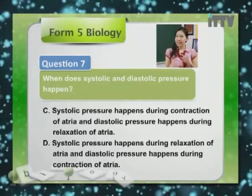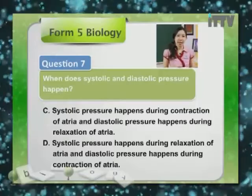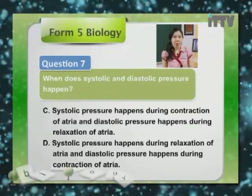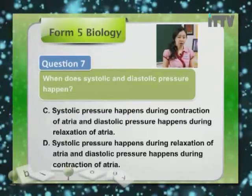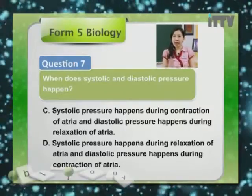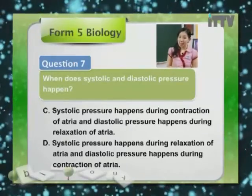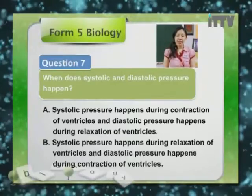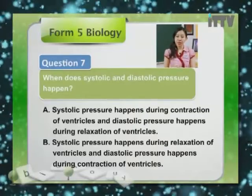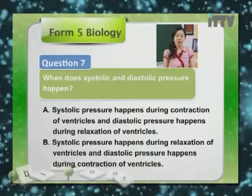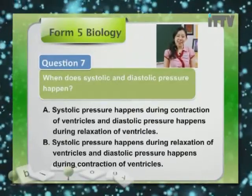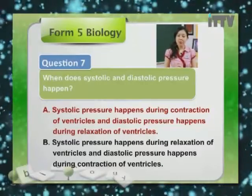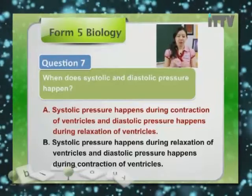To know this answer you have to be clear that systolic and diastolic pressure are about ventricles — nothing to do with atria. So C and D are eliminated. Looking at A and B, the answers are about the ventricles. Systolic happens during contraction of ventricles — that is correct — while diastolic pressure happens during relaxation of ventricles — also correct. So the answer for Question 7 is A. B is the opposite and is obviously wrong.